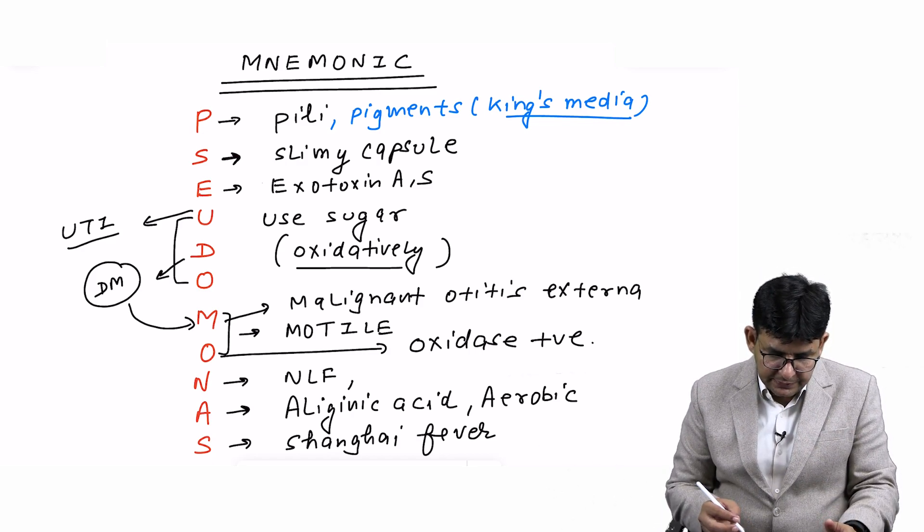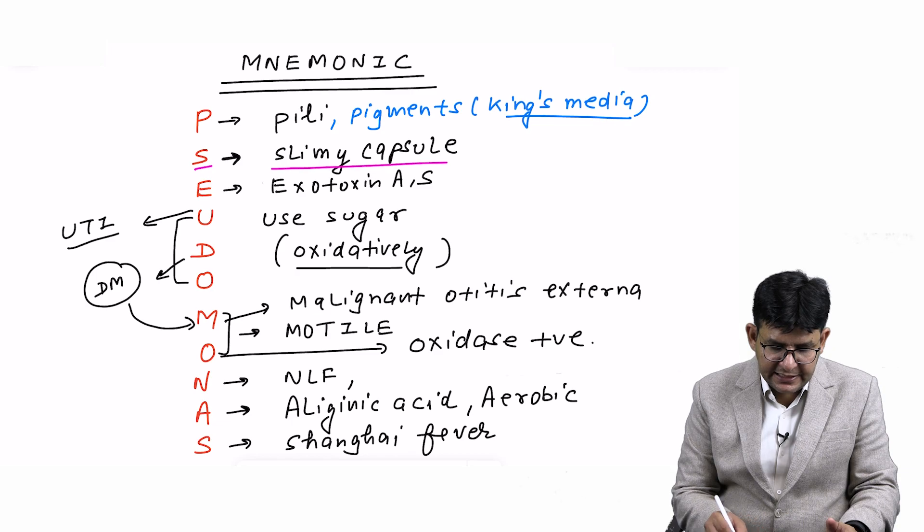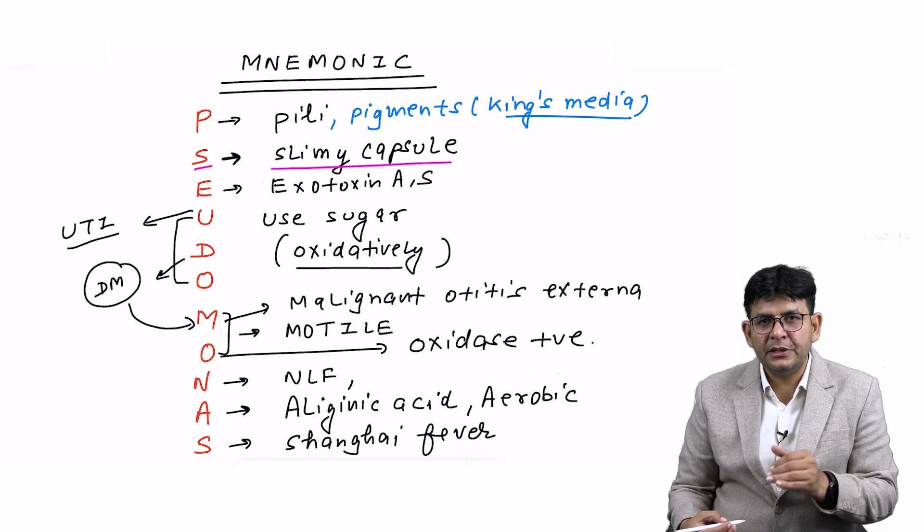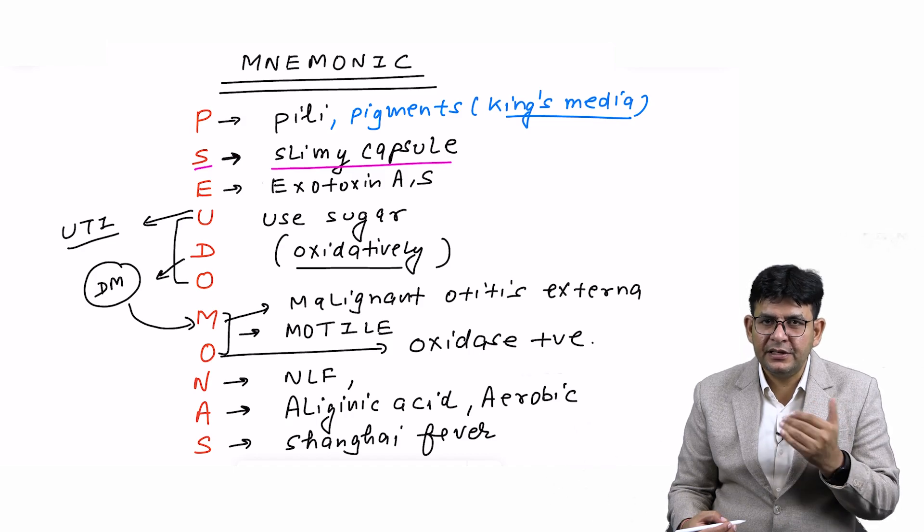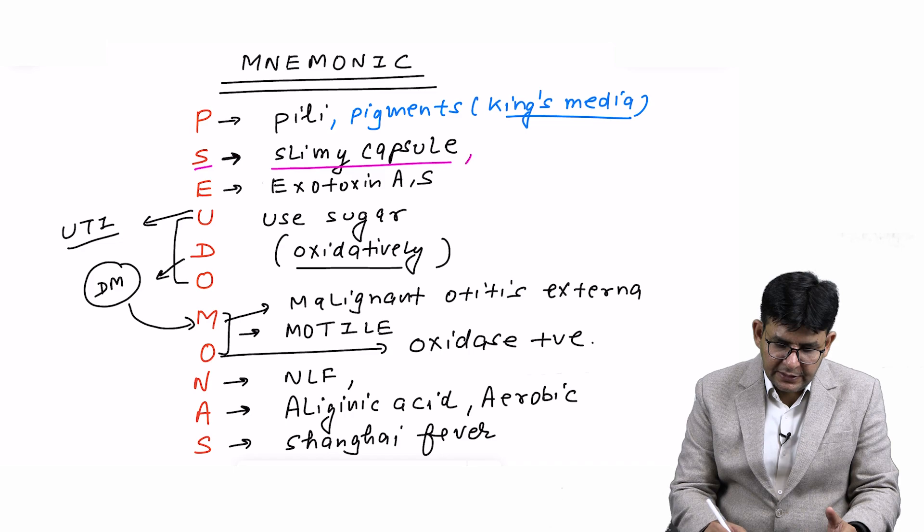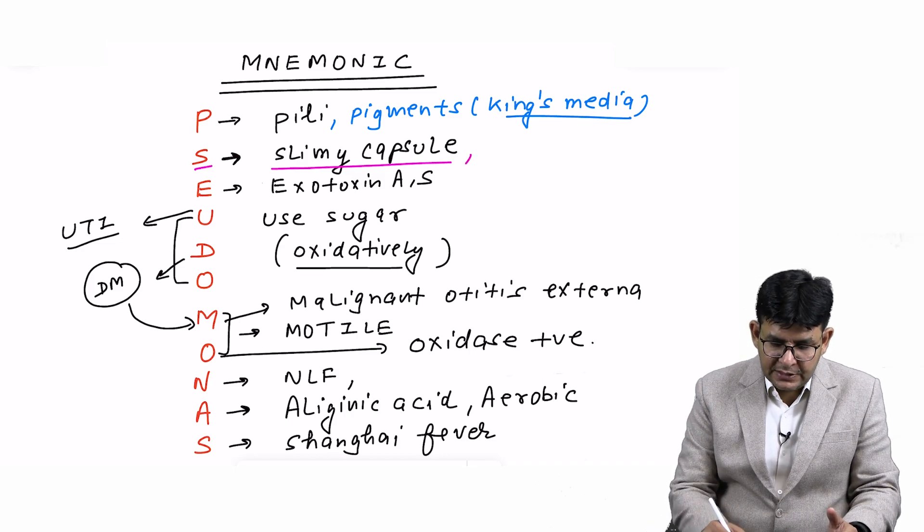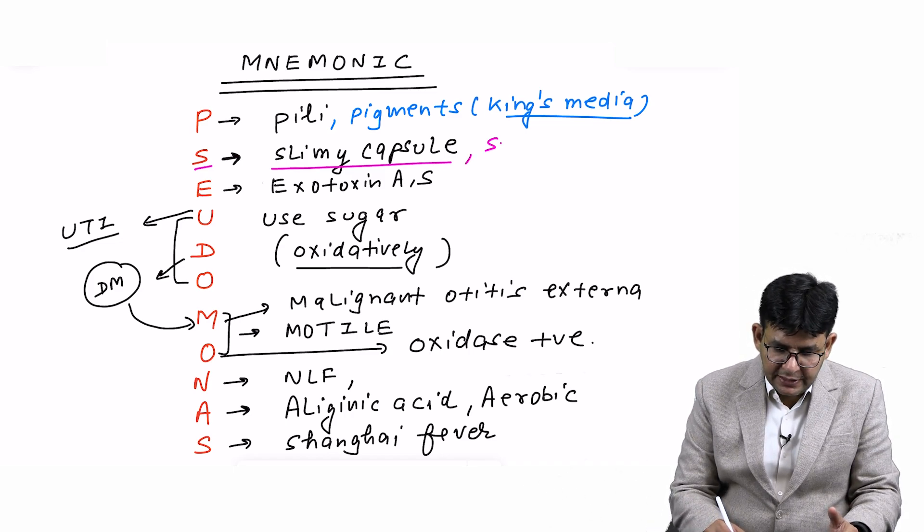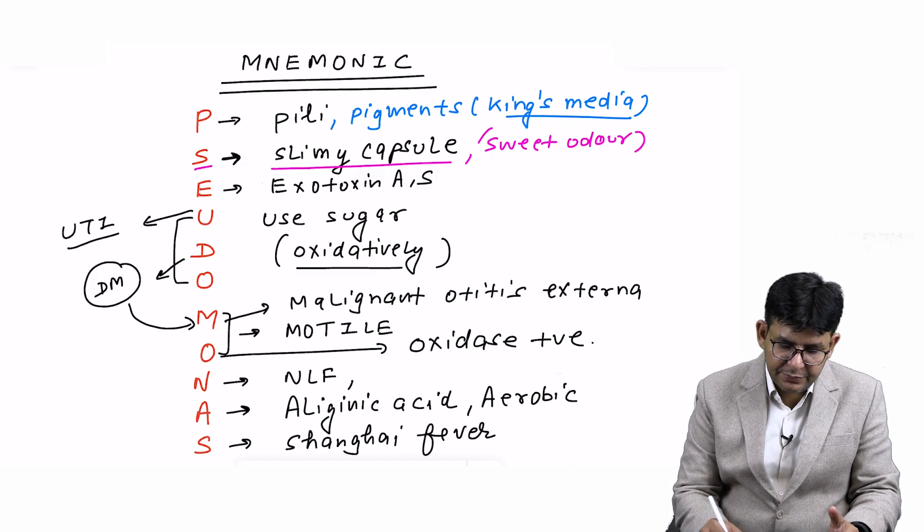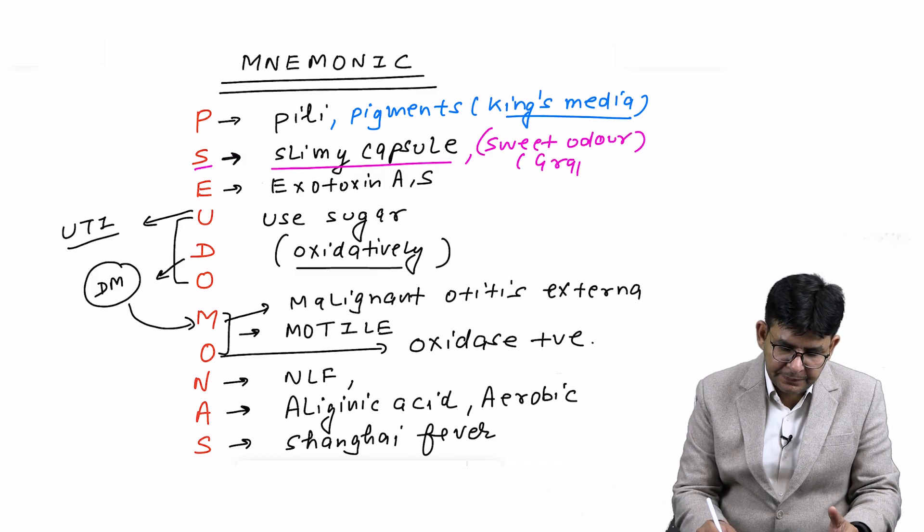Talking about S: S is slimy capsule. It has a slimy layer which helps it attach to various surfaces, like the pili. From S you can also remember that it has a sweet odor, a grape-like odor or fruity odor of grapes, which is a feature of Pseudomonas.